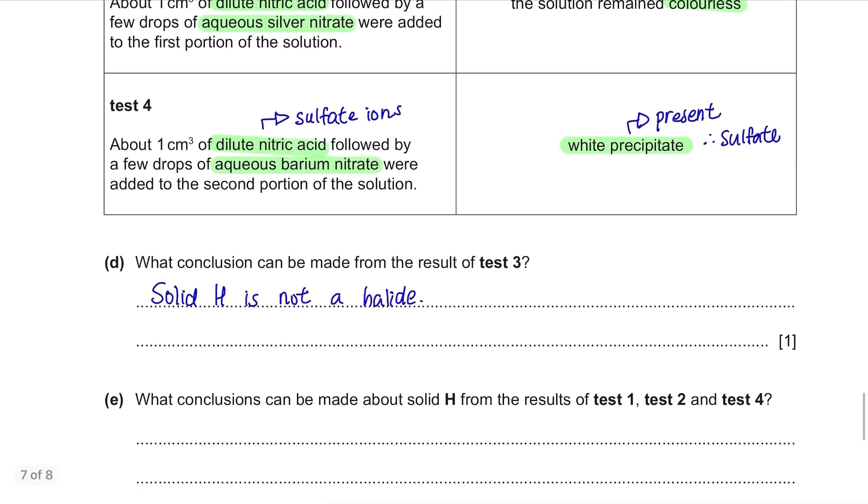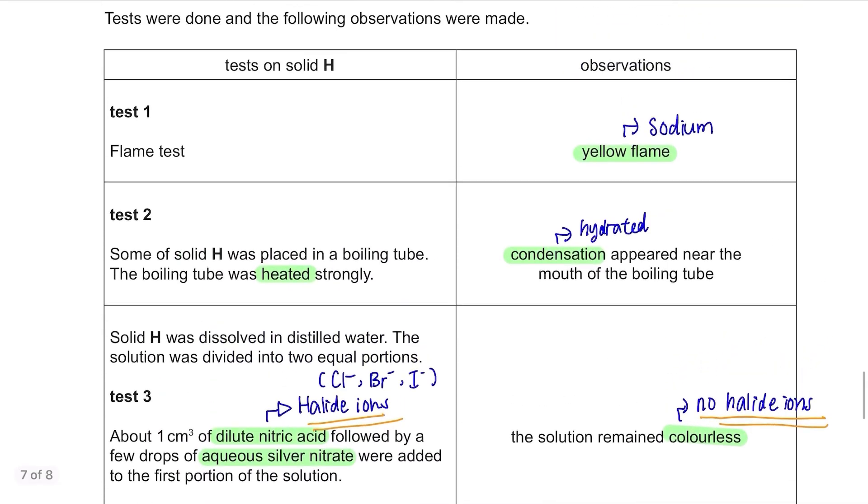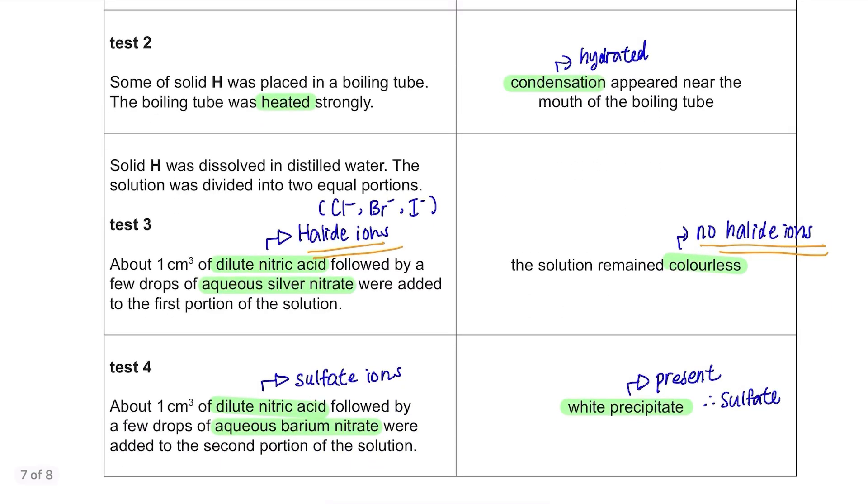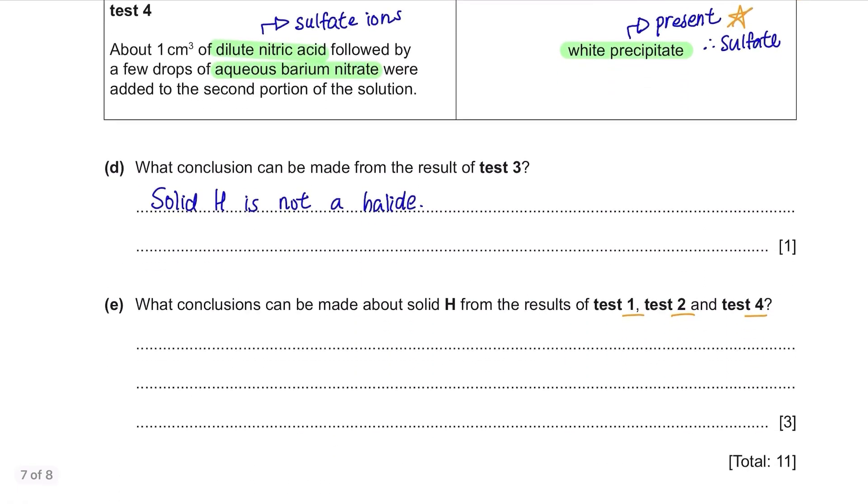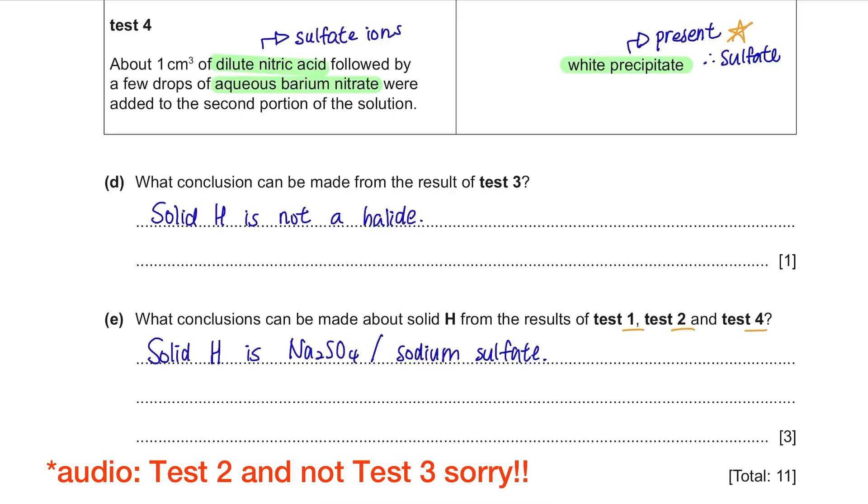Part E. What conclusions can be made about solid H from the results of test 1, test 2 and test 4? From test 1, we found out that it contains sodium ions and in test 4, we found out that it contains sulphate. So, the solid H is Na₂SO₄ or you can write sodium sulphate. Also from test 2, we found out that it's hydrated.